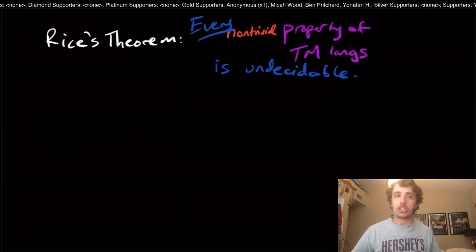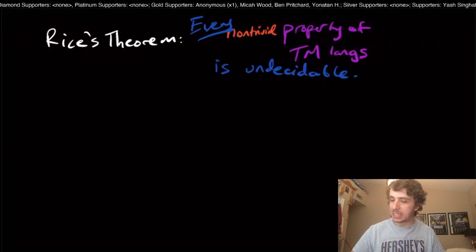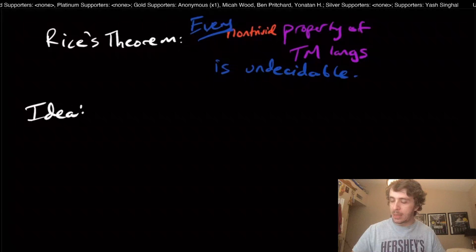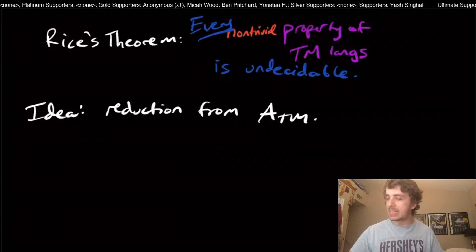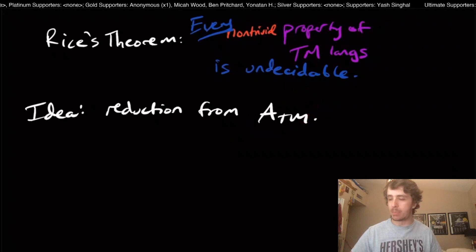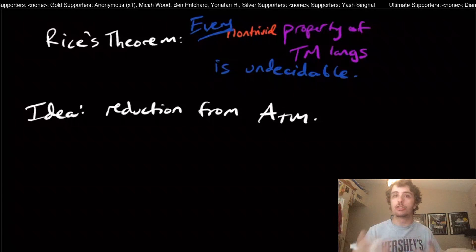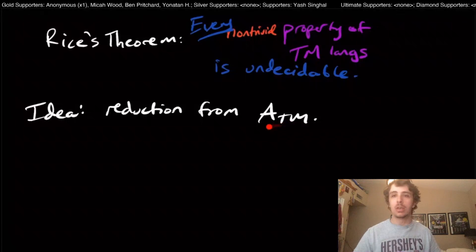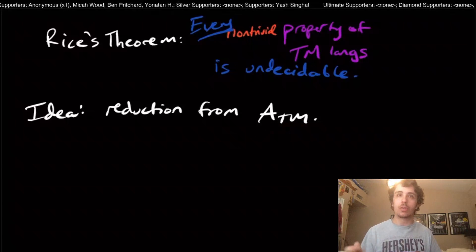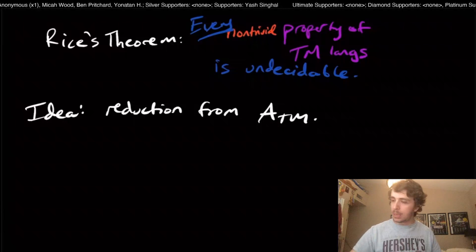Undecidable just means there's no algorithm to figure out whether a Turing machine has the property or not. The essential idea behind the proof is a reduction from the ATM problem. ATM asks whether a machine accepts an input. In this reduction, we take the Turing machine and input and construct a Turing machine that either has the property or doesn't, depending on whether the original Turing machine and input were in ATM or not.